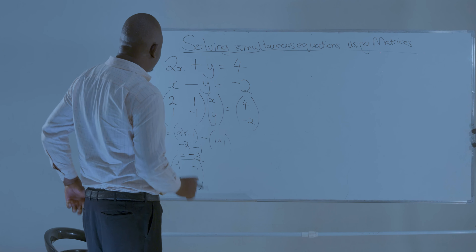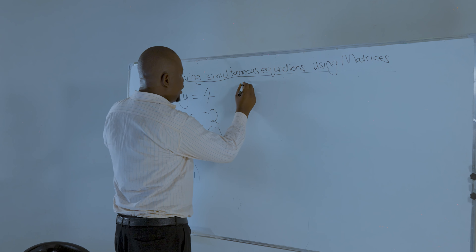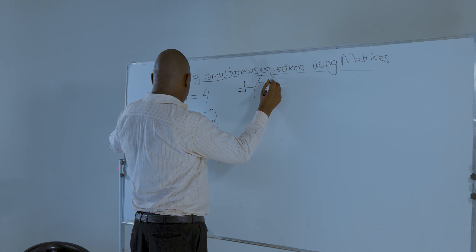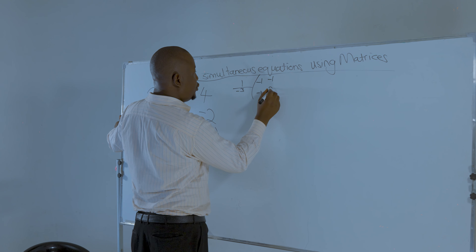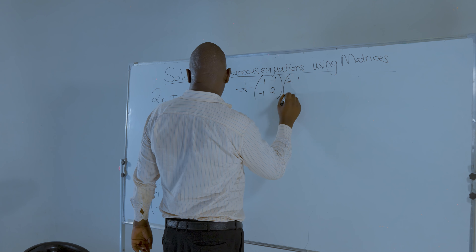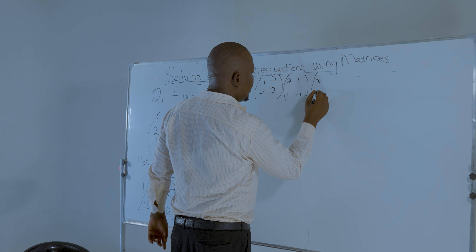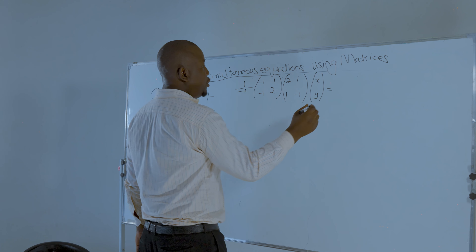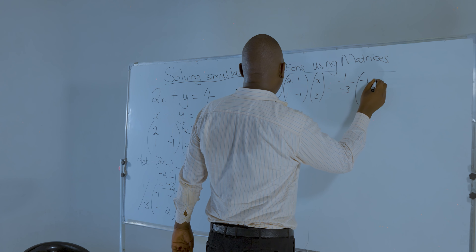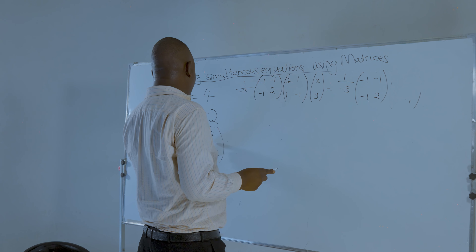We take the inverse and multiply both sides of the equation. So it's 1 over negative 3, with entries minus 1, minus 1, minus 1, 2, multiplied by the original matrix 2, 1, 1, minus 1, and XY, equal to 1 over negative 3 with entries minus 1, minus 1, minus 1, 2, multiplied by 4 and minus 2.